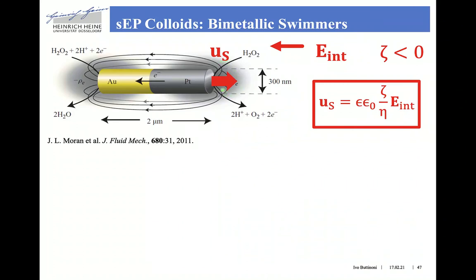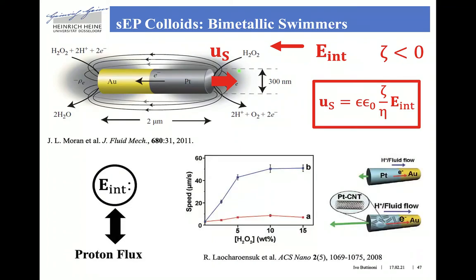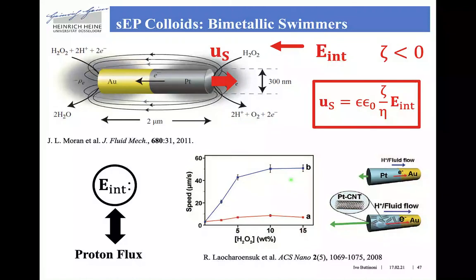More importantly, it also depends on the proton flux, which in turn can be adjusted by increasing the hydrogen peroxide concentration of the solution, or can even be boosted by adding carbon nanotubes inside the platinum segment. On the other hand, if we put an insulator between the two sides, then the propulsion of these nanotubes ends.